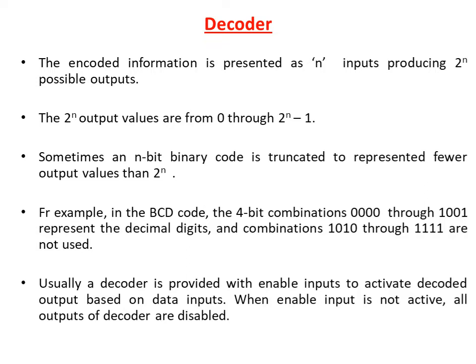Sometimes an n-bit binary code is used to represent fewer output values than 2-power-n. For example, in the BCD code, the 4-bit combinations 0000 through 1001 represent the decimal digits and the combinations 10 to 15 are not used. Generally, a decoder is provided with enable inputs to activate decoded output based on data inputs. When enable input is not active, all outputs of the decoder are disabled.